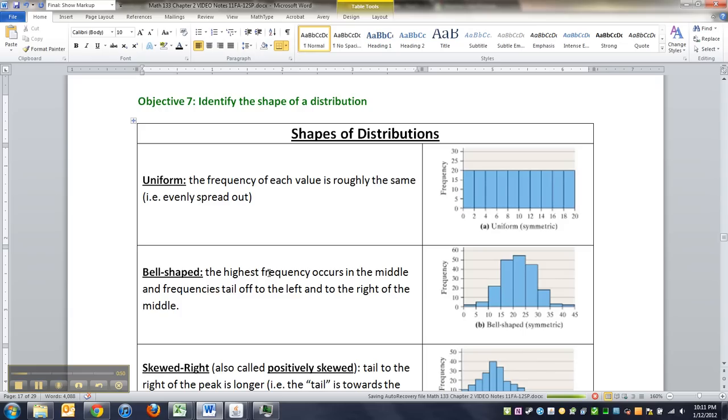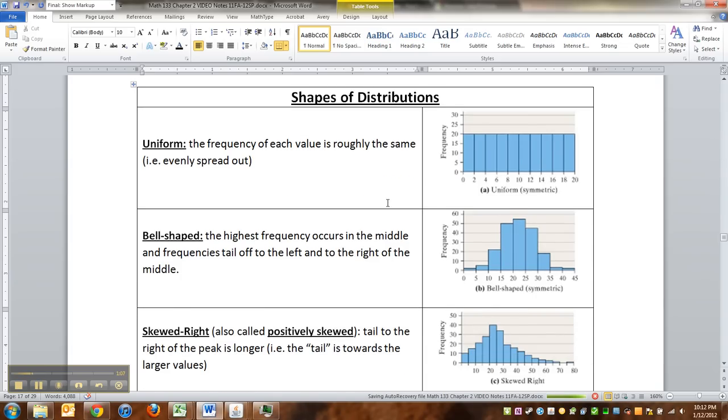There's the uniform shape, where everything is more or less evenly spread out. Now, they're not going to be exactly 20 every time like this. They're going to be up and down, but they'll be pretty evenly spread out. All the bars will be mostly the same height. Not exactly, but mostly.